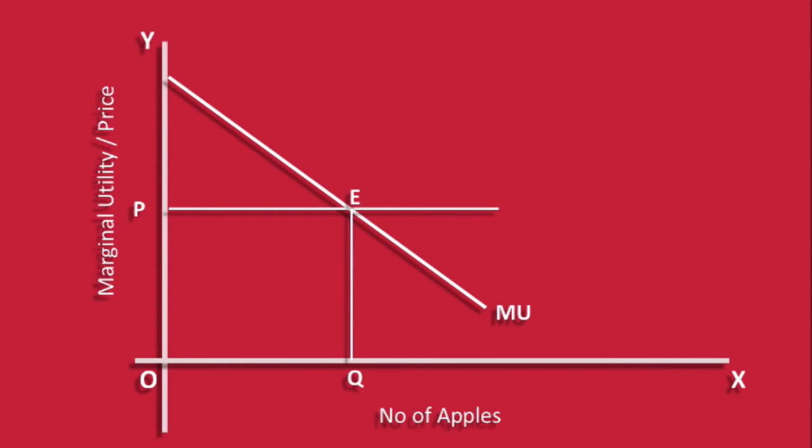E is the point of equilibrium. He buys Q number of apples. At point E, marginal utility is equal to price. Marginal utility is falling. The two equilibrium conditions are satisfied at this point.